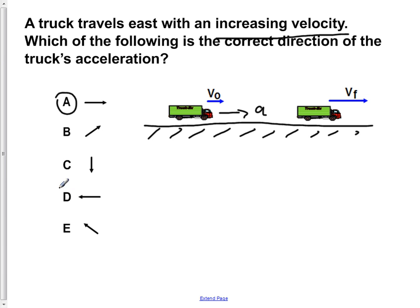Whereas something like choice D would result in the object slowing down. This corresponds to a deceleration. So that's why that's wrong. Choices B and E both have a vertical component. So that would cause, for some reason, your truck to have a velocity going upwards later on when it initially didn't have one. But you're not going to accelerate your truck upwards. So these don't make sense.